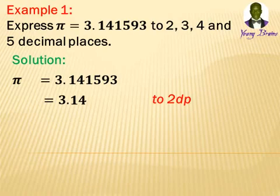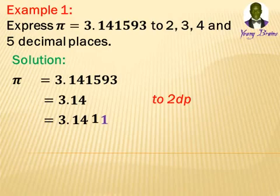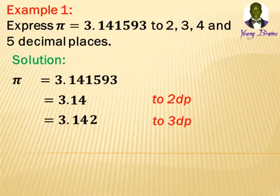Next is to correct it to 3 decimal places. We write 3.141 — that is three numbers after the decimal. But the fourth digit is 5, which is approximated to 1, and that 1 is added to the last digit in the required decimal place — the 1 becomes 2. So to 3 decimal places it gives us 3.142.